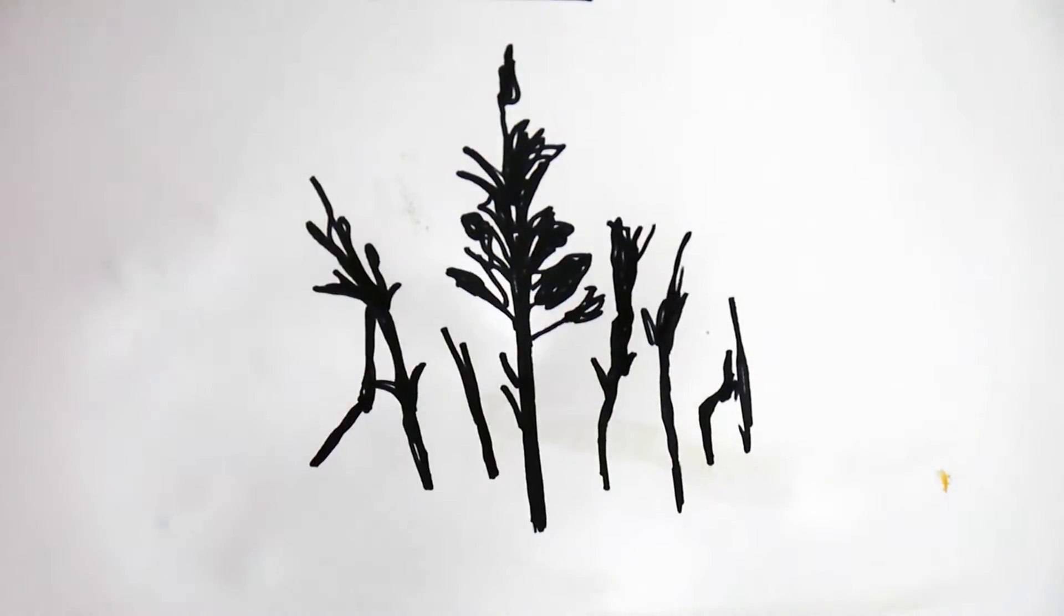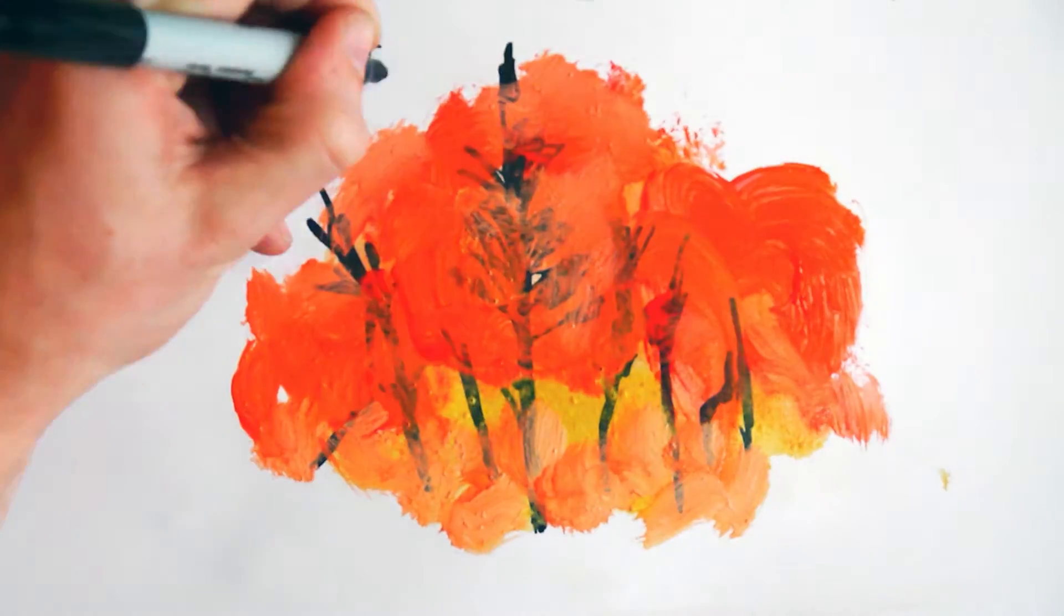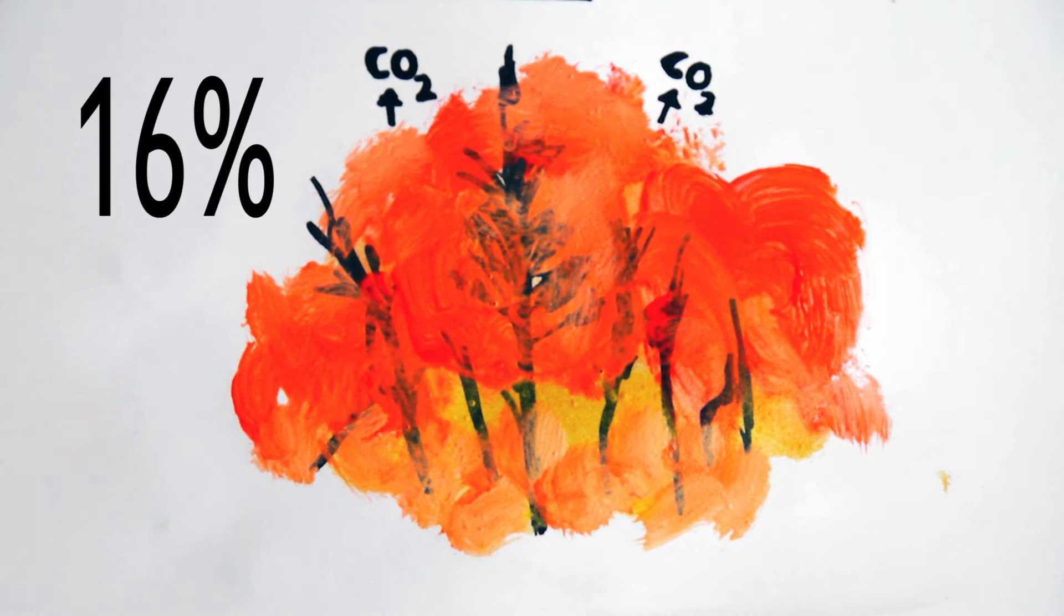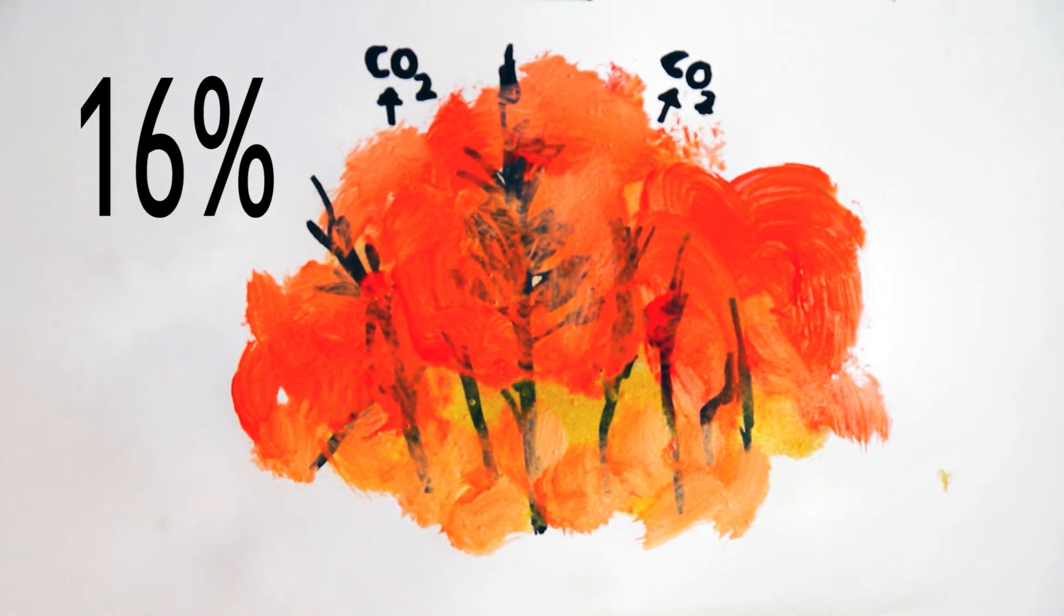However, when forests are felled by slash-and-burn techniques, most of the carbon that's stored in the wood is released back into the atmosphere. And currently, 16% of all CO2 emissions annually come from clearing of trees.